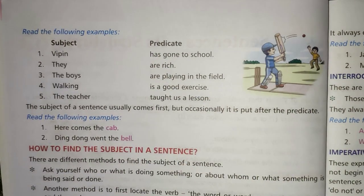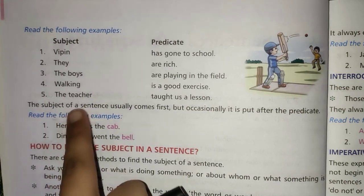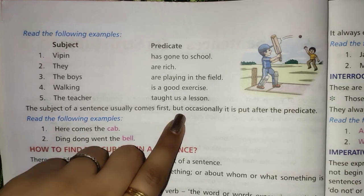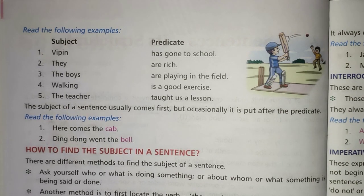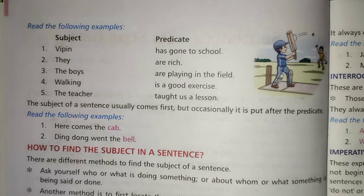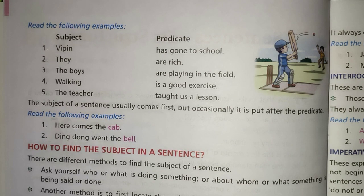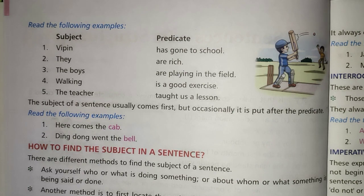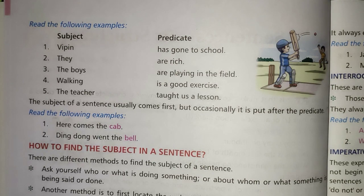Students, the subject of a sentence traditionally comes first, but occasionally it is put after the predicate. So basically, our subject does not always come at the start of the sentence — sometimes it can be at the end. For example: 'Here comes the cab' and 'Ding dong went the bell.' In both of these sentences, 'the cab' and 'the bell' are the subjects, and they appear at the end.